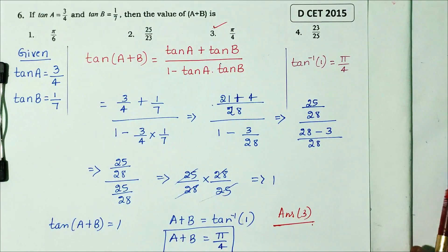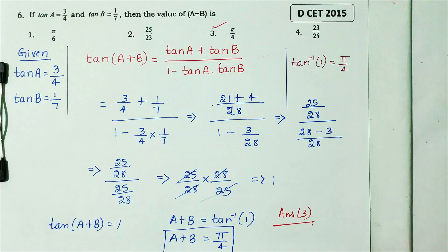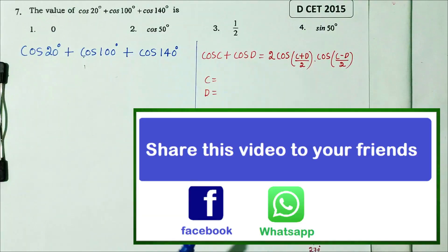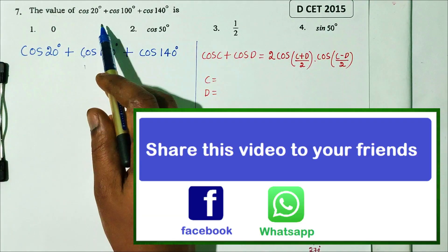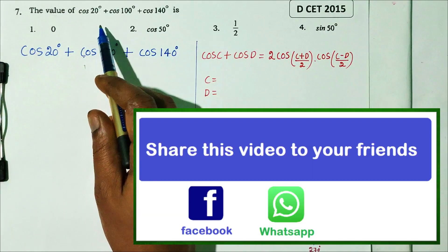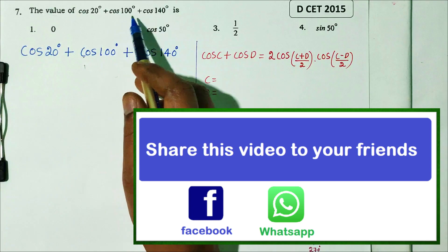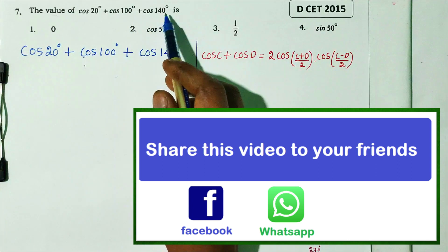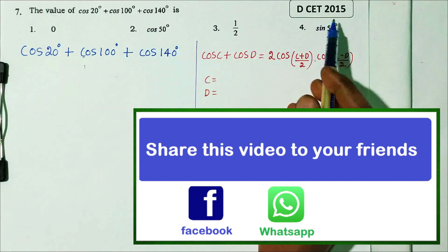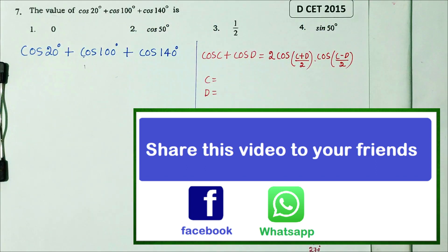DCT 2015 question number 7. The value of cos 20 degree plus cos 100 degree plus cos 140 degree. DCT 2015 question.